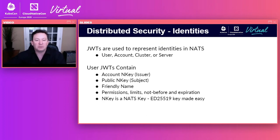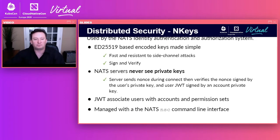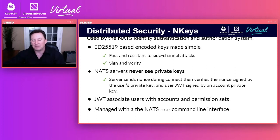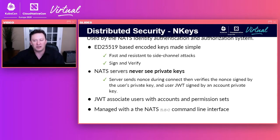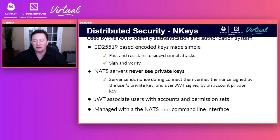NKeys are ED25519 keys made easy, housed in JWTs, and associated with a user, account, cluster, or server. We use ED25519 because it's fast and resistant to side-channel attacks. We use them to sign and verify in such a way that the NATS system will never see private keys. The server sends a nonce during connect, the client signs the nonce with its private key, and the server verifies the client belongs to a known account — approaching a zero-trust system. All this is managed by the NSC command line interface.